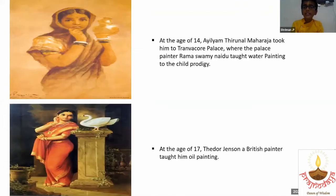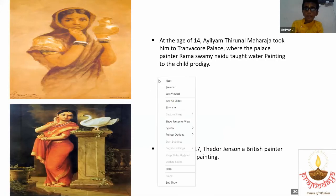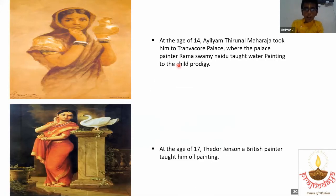At the age of 14, Ayilyam Turunal Maharaja took him to Travancore Palace, where the palace painter Ram Swaminaidu taught water painting to the child prodigy. And this is the water painting he drew there.